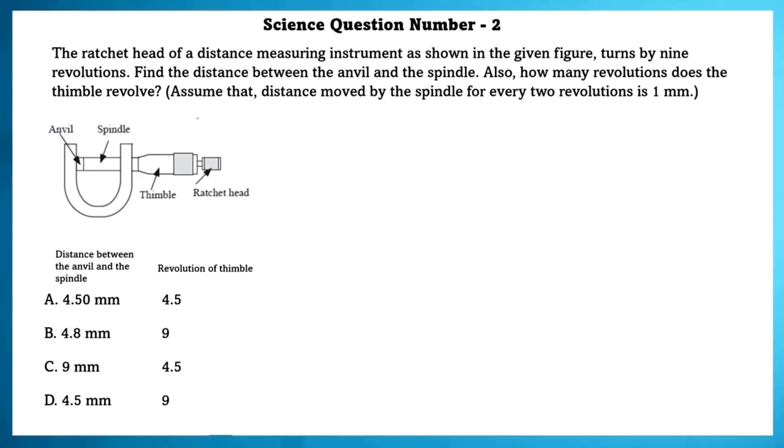Science Question Number 2. The ratchet head of a distance measuring instrument as shown in the given figure turns by 9 revolutions. Find the distance between the anvil and the spindle. Also how many revolutions does the thimble revolve? Assume that distance moved by the spindle for every two revolutions is 1 mm.